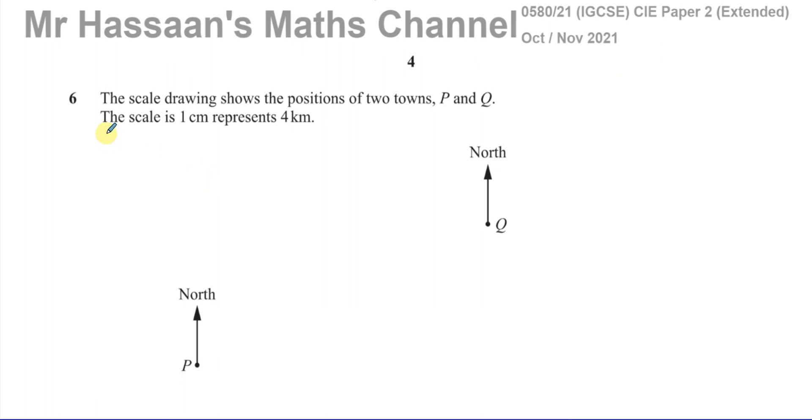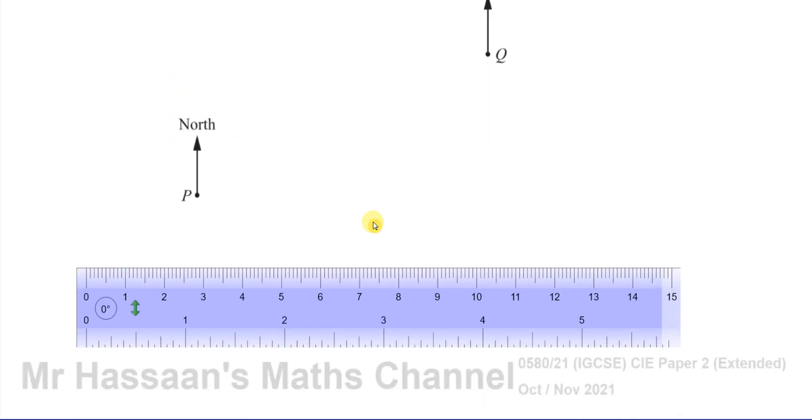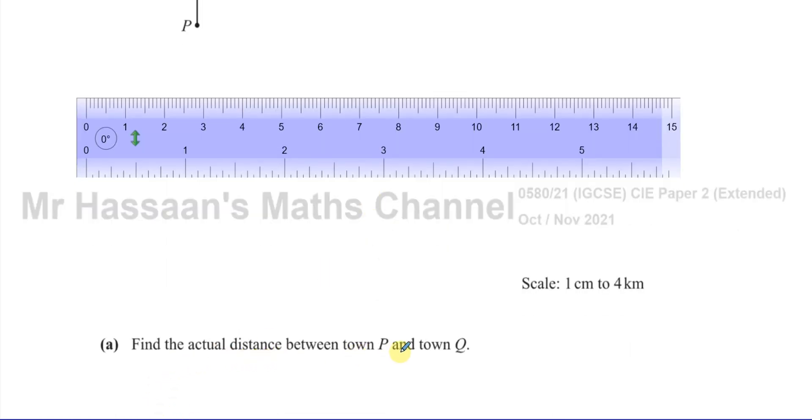So now it says the scale drawing shows the positions of two towns P and Q. The scale is one centimeter represents four kilometers. And the question tells us to find the actual distance between town P and town Q.